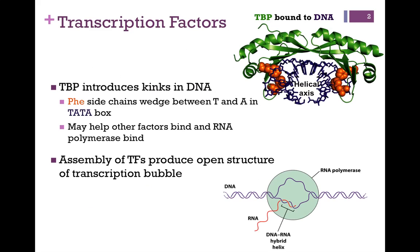We have a figure from your book at the top of the screen — the TATA binding protein in ribbon diagram in green, and it's binding to the TATA box of DNA, which is depicted in purple. The orange spheres represent phenylalanine residues that are present on TATA binding protein, and they wedge between the T's and the A's within that TATA box. Phenylalanine has a very hydrophobic side chain, and it associates very well with those rather hydrophobic bases.